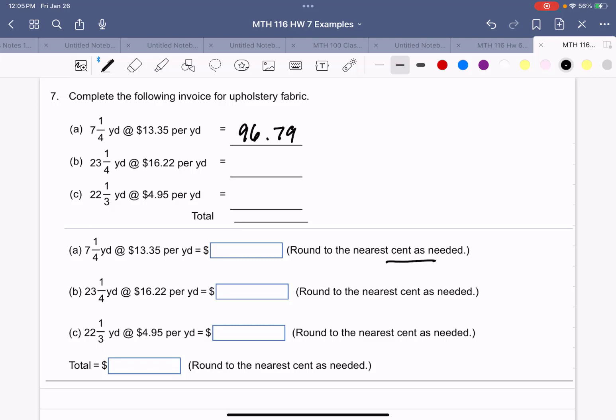23 1/4 times $16.22 is $377.12 because it comes out to .115 and I have to round up that one. 22 1/3 yards times $4.95 is $110.55 exactly.